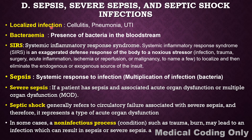Throughout the body or body system, there is a particular localized infection or inflammation. For example, cellulitis, pneumonia, UTI — urinary tract infection — these are localized infections.